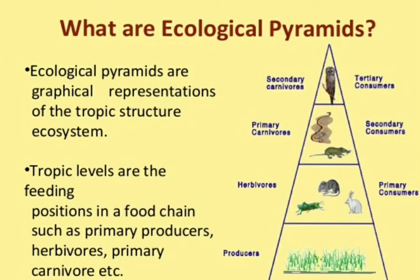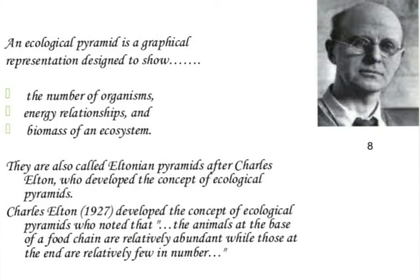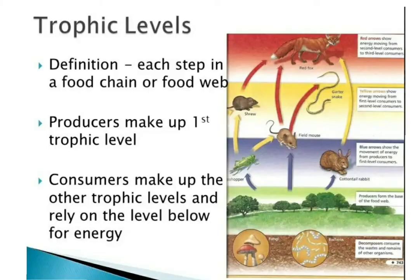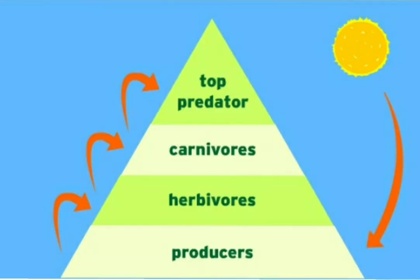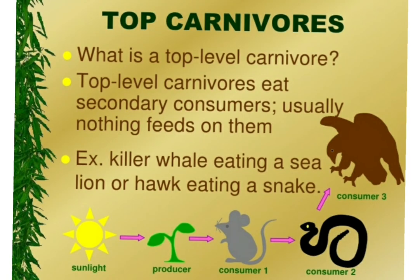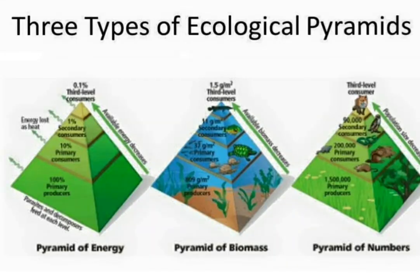An ecological pyramid is a graphical representation of the relationship between organisms in an ecosystem. It was first introduced by the British ecologist Charles Elton. The position each organism occupies is called the trophic level. In an ecological pyramid, producers are at the base and represent the first trophic level; herbivores or primary consumers are at the second trophic level; secondary consumers occupy the third trophic level; and so on, ending with top carnivores — organisms that prey on others but are not preyed upon, such as the lion. There are three types of ecological pyramids: pyramid of biomass, pyramid of numbers, and pyramid of energy.